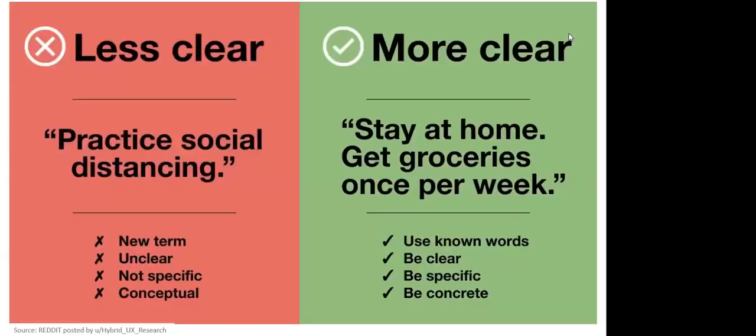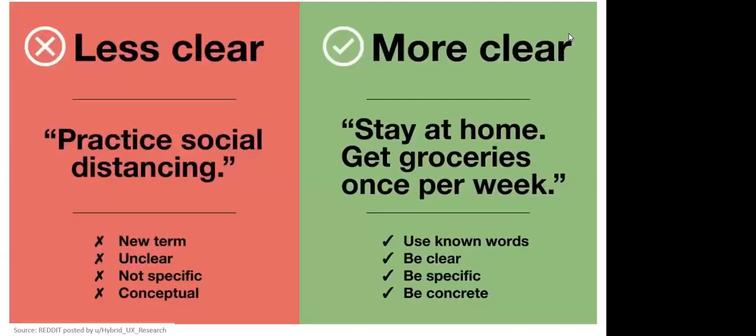So this is something interesting that I saw that was on floating around in what health communication. And so we think about that being simple message, what did we first hear? Practice social distancing. And everybody is like, what is social distancing? Some people even have said that it should have been called physical distancing. Because if you think about the mental health ramifications, some people are being so isolated that physical have your face apart versus social distancing so people can still connect. But here, they said more clear, stay at home, get groceries once per week. And so what are those clear directives that we can use?